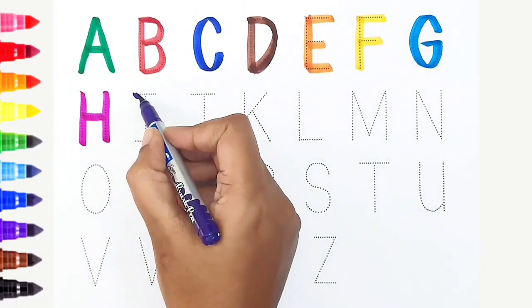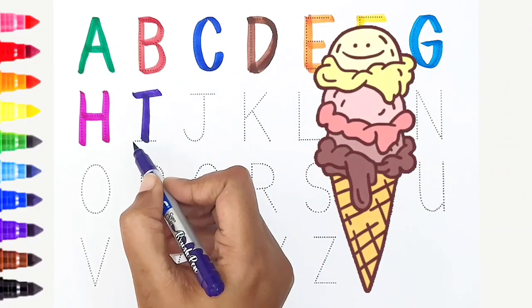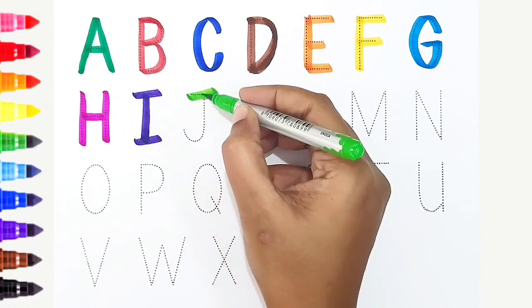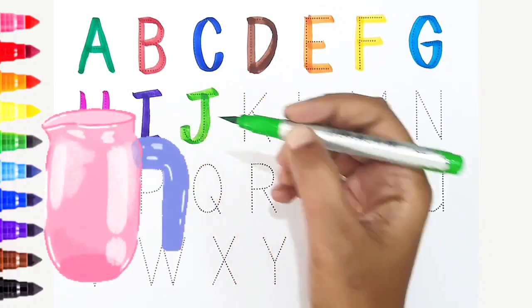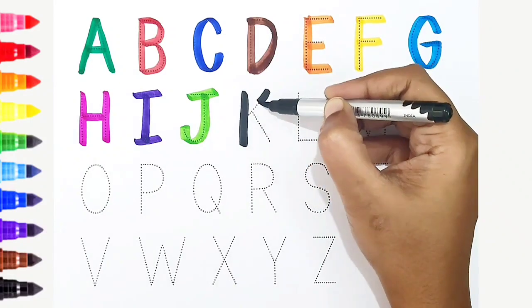I, violet color. I is for ice cream. J, light green color. J is for jug. K, black color. K is for kangaroo.